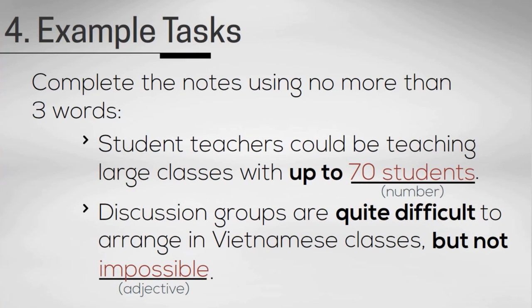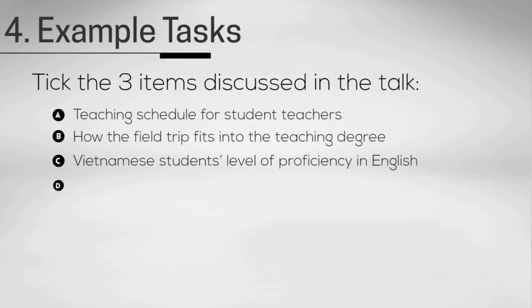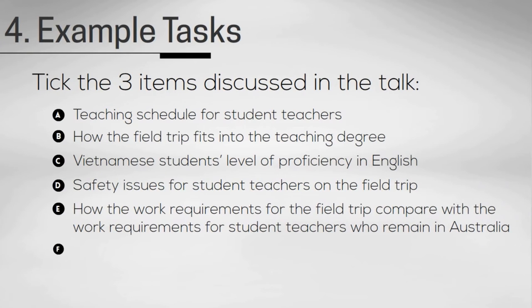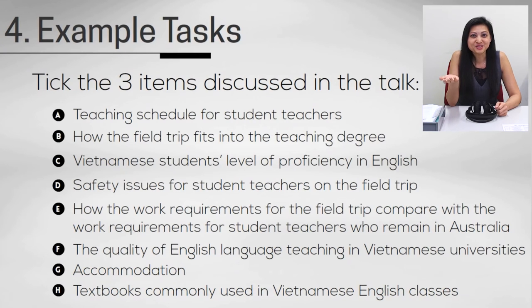Let me give you an example of another task. Here we have three items which are discussed in the talk. You have to tick three items. Read through the list and let's check which ones are more likely. All of them seem possible, so you're going to have to listen carefully to make sure you get the correct answer. Let's see if we can do it.